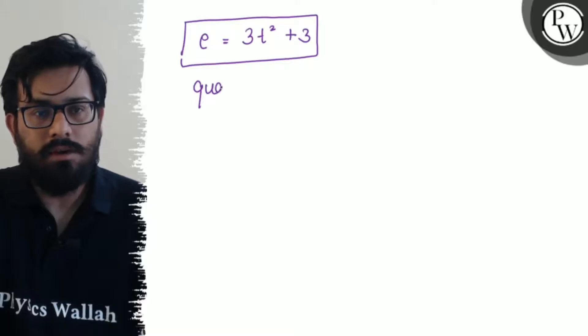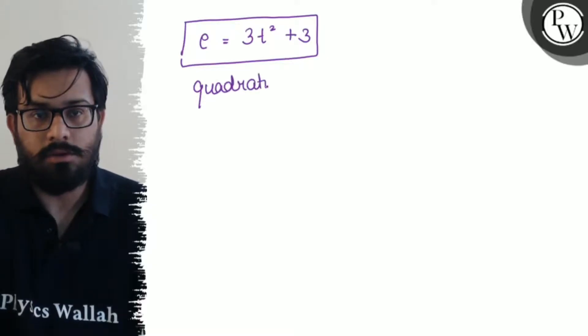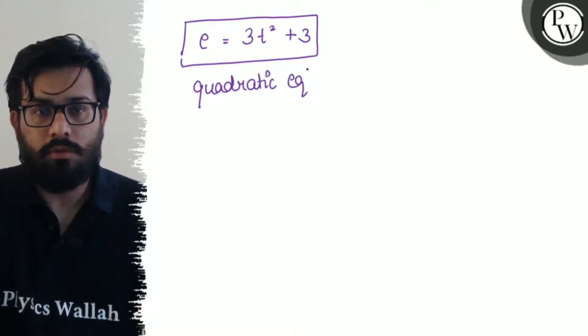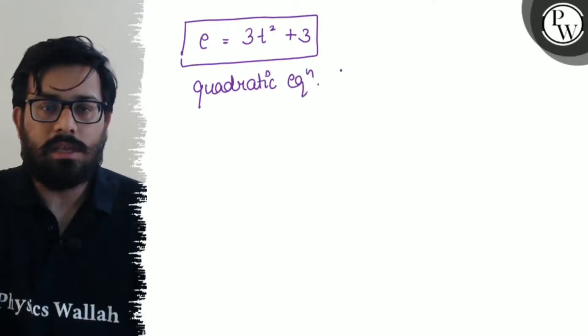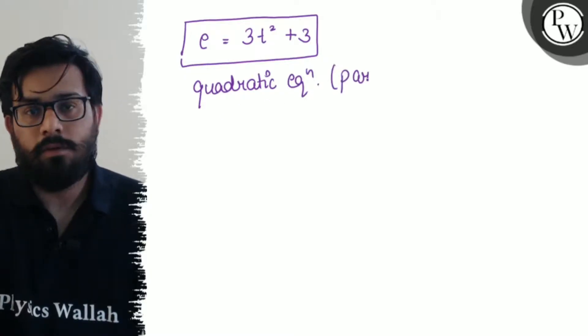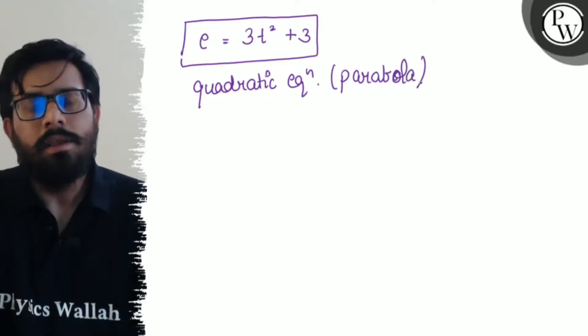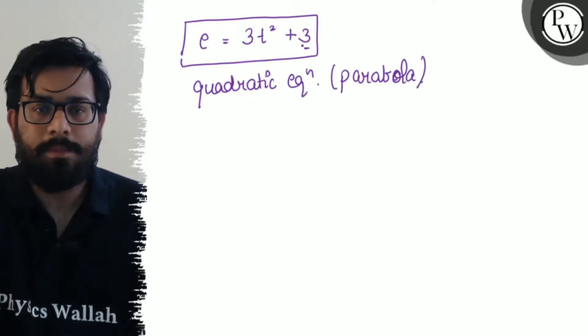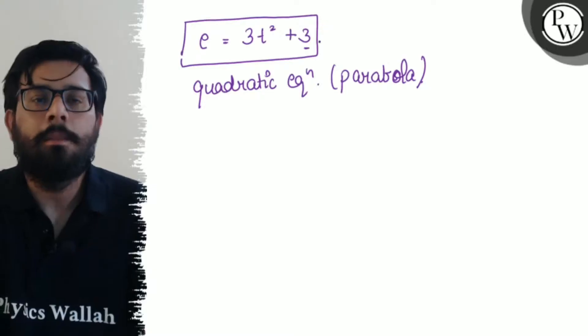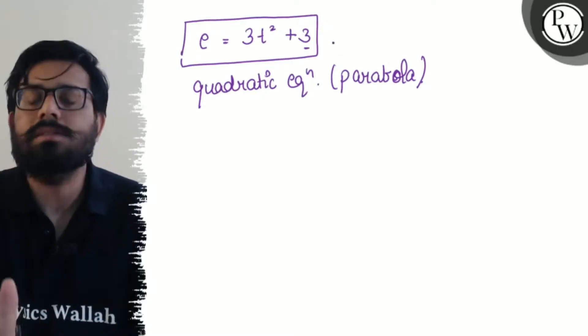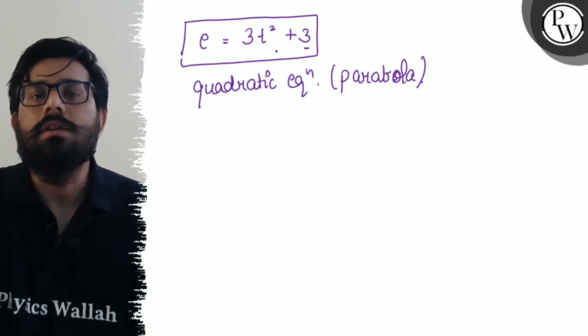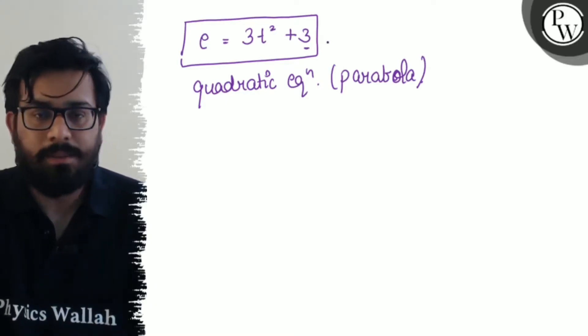So this is your final answer. The induced EMF comes out to be 3t² + 3. This is a quadratic equation, and for this a parabola curve will be drawn. The curve will be a parabola. Since this equation has some intercept as well, we cannot say that this parabola passes through the origin.